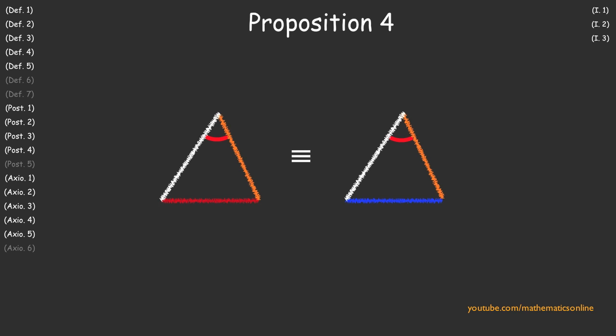It is important to note that today, Proposition 4 is actually considered an axiom, but for historical purposes, we will demonstrate Euclid's proof of Proposition 4.